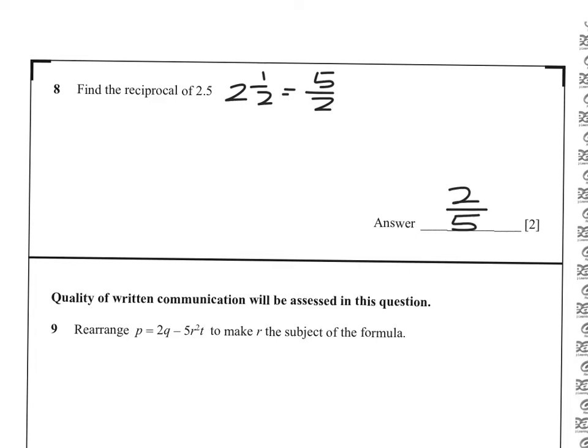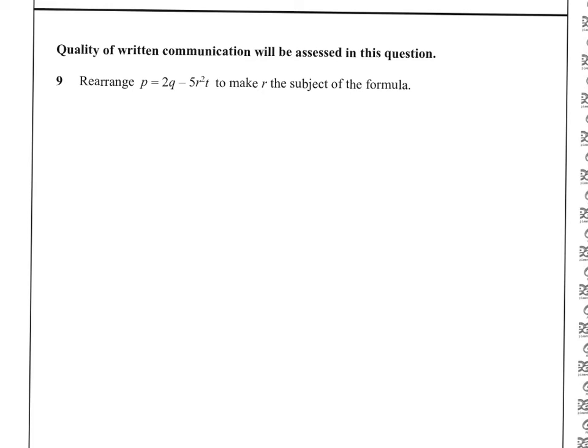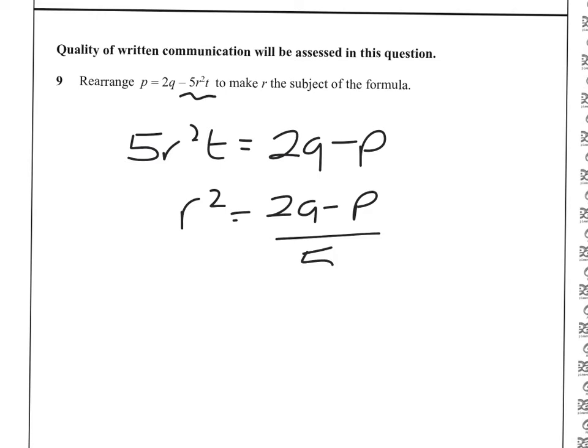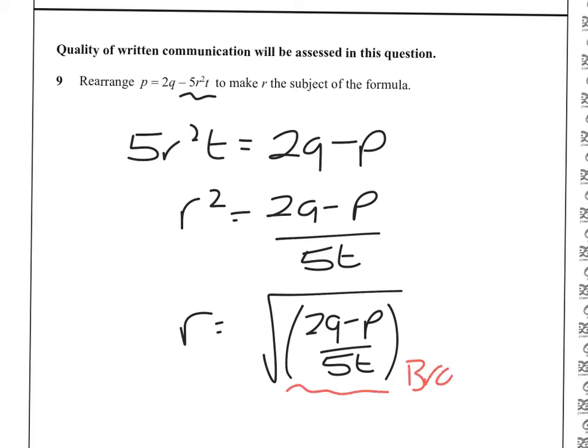To start with in this question, I'm going to make the minus 5R squared a positive, so 5R squared T must equal 2Q minus P. Dividing them by 5T, R squared will be 2Q minus P all over 5T, and then R will be the square root of 2Q minus P over 5T. We would encourage you to use the brackets, because otherwise you can sometimes only put the square root sign over the numerator, and then you'll lose a mark.